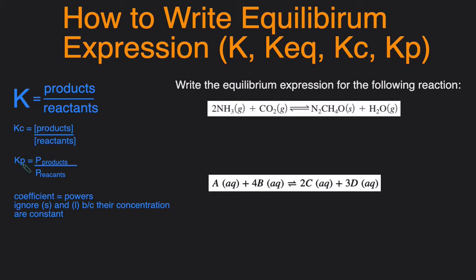Kp is the pressure of products over the pressure of reactants. If you're just asked to write K or Keq without the specification of Kc and Kp, then just default to using concentration unless otherwise specified.